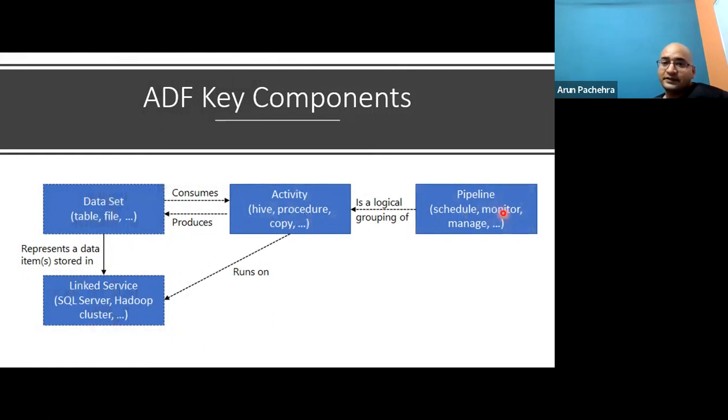So pipeline, as you can see, is the crucial, important component. We have mentioned it a few times at the beginning. So a data factory might have one or more pipelines. A pipeline is a logical grouping of activities that performs a unit of work. Together, the activities in a pipeline perform a task. For example, a pipeline can contain a group of activities that ingest data from an Azure blob, and then runs a hive query on an HDInsight cluster to partition the data. So these are like two activities put together in the pipeline. The benefit of this is that the pipeline allows you to manage the activities as a set instead of managing each one individually. The activities in a pipeline can be chained together to operate sequentially or they can operate independently in parallel.